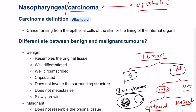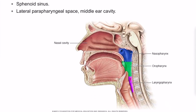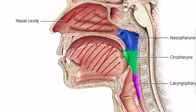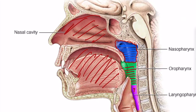So nasopharyngeal carcinoma is a tumor of epithelial origin that arises from the nasopharynx. Looking at a cross-section of the head and neck, you can see the nose on top and the oral cavity below. Behind the oral cavity is the oropharynx, and behind the nose is the nasopharynx. This nasopharynx is lined on the inside by epithelial cells, which can turn malignant and result in nasopharyngeal carcinoma.